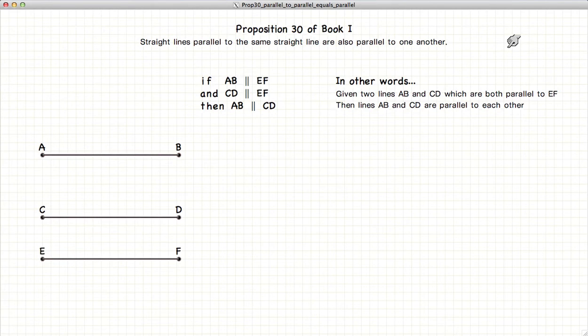This video covers Proposition 30 of Book 1, which states that if line AB is parallel to line EF, and line CD is also parallel to EF, then AB is parallel to CD.